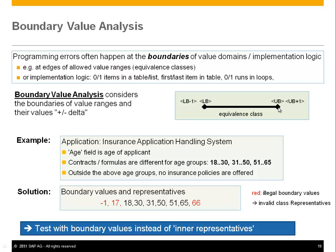For instance, to check the illegal value above 65, you want to test 66. This way you make sure that all the boundaries of definition domains and equivalence classes are handled correctly. Instead of a single representative of an equivalence class, you take two boundary values plus the outside values of the equivalence classes.